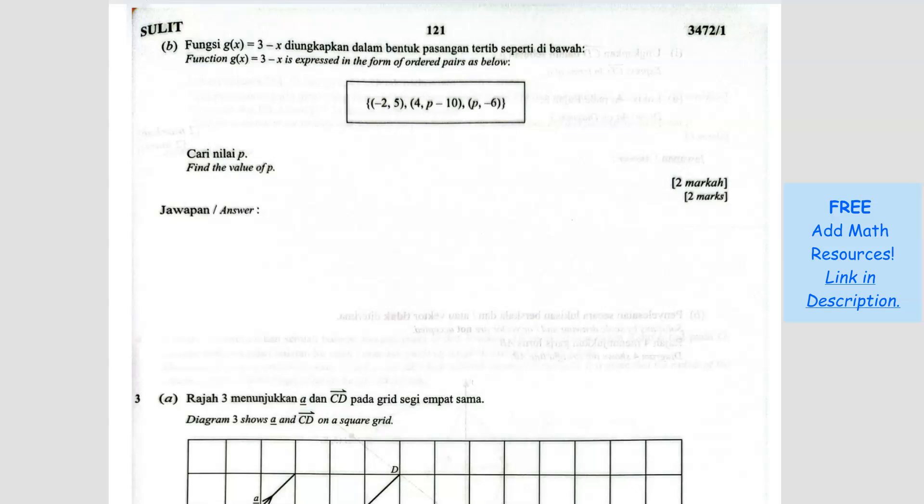Question B, 2B. Function g(x), so they gave us the function here. g(x) equals 3 minus x is expressed in the form of ordered pairs.